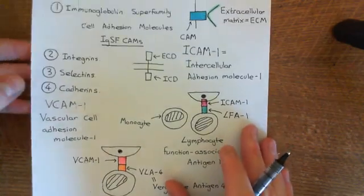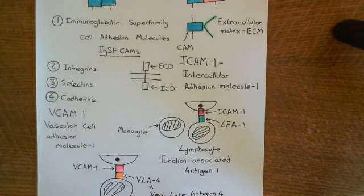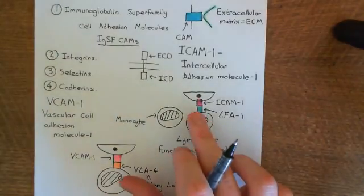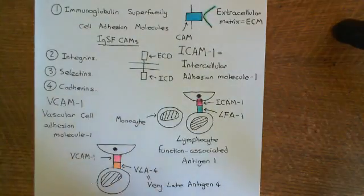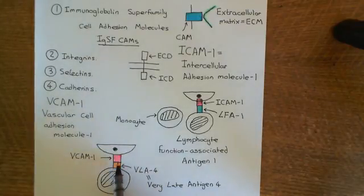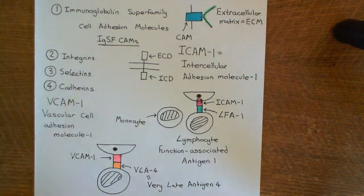The final example is platelet endothelial cell adhesion molecule 1, or PECAM-1. It's important to note that the ICAM-1/LFA-1 and VCAM-1/VLA-4 interactions are both examples of heterophilic binding — an immunoglobulin superfamily cell adhesion molecule binding to an integrin family cell adhesion molecule. They are not in the same family. The next example, PECAM-1, will instead be an example of homophilic binding.